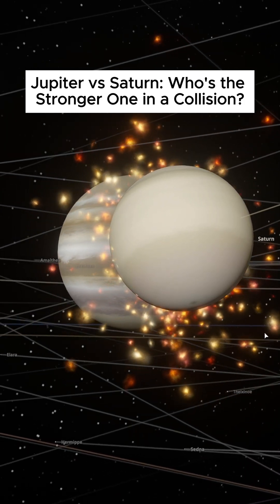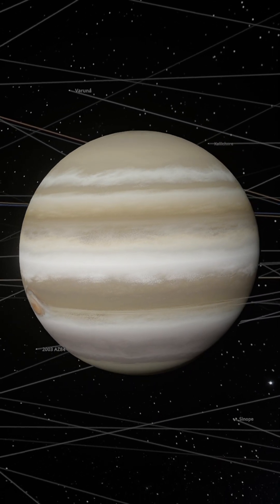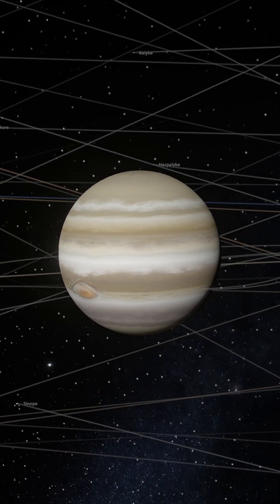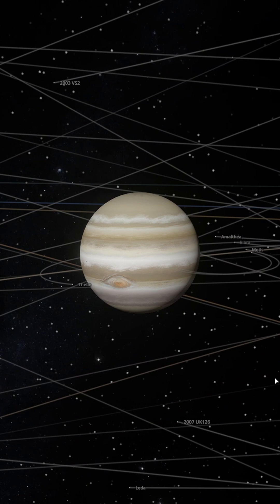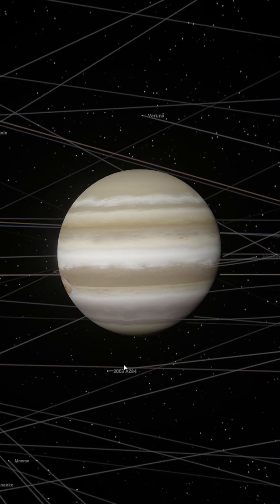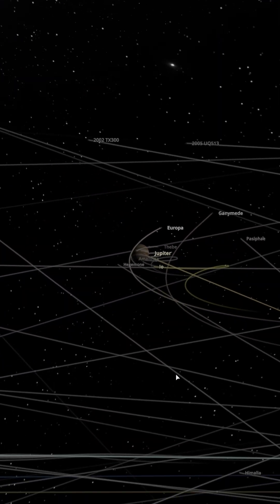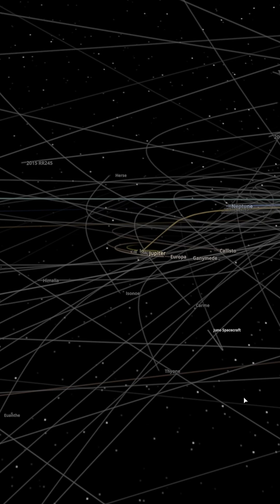Jupiter versus Saturn. Who's the stronger one in a collision? Jupiter is the largest planet in the solar system, with a mass 2.5 times greater than the combined mass of all other planets. Its diameter is 139,820 kilometers, and its volume is large enough to fit 1,300 Earths.